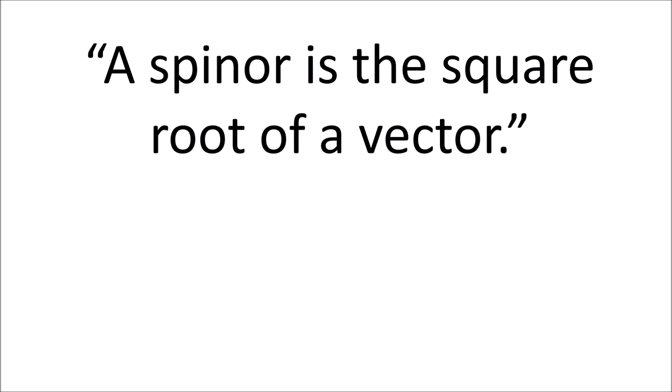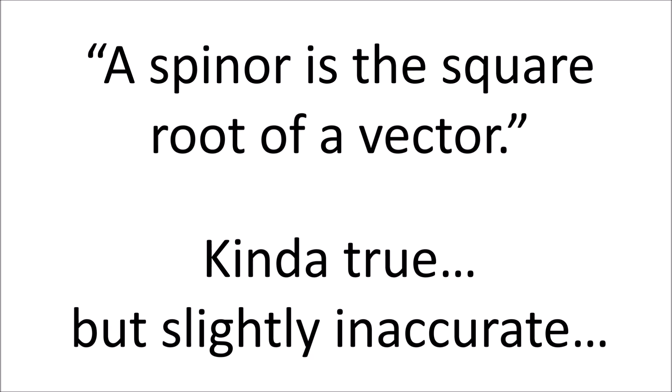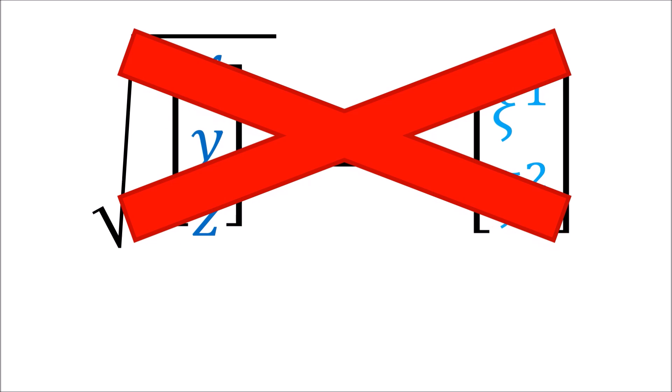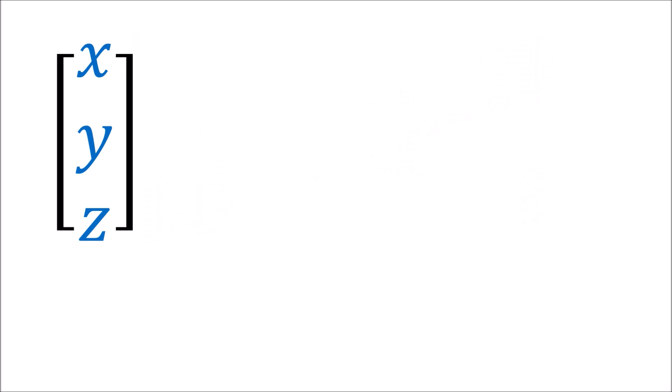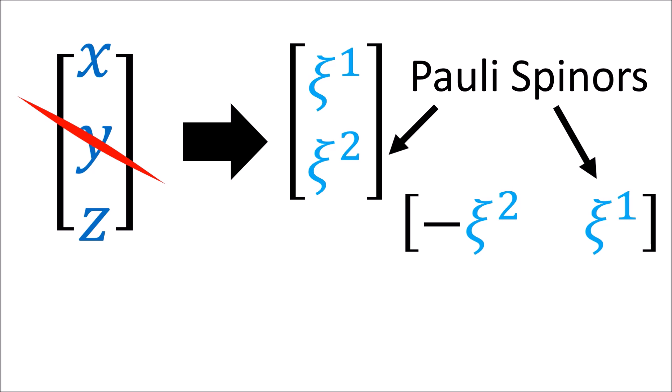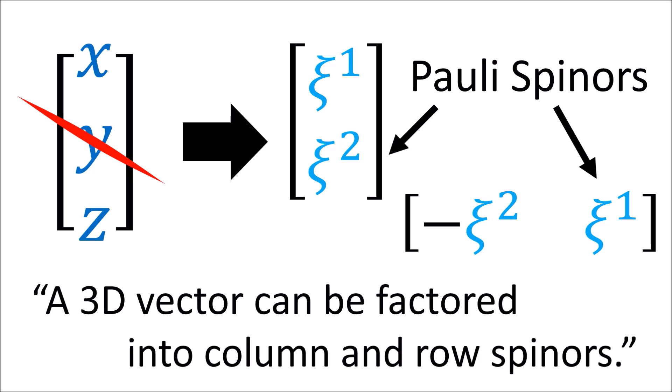It's often said that a spinner is like the square root of a vector, and that's kind of true but slightly inaccurate. If you're thinking of taking an actual square root of a vector and getting a spinner, that's not correct. What is true is that we can take a 3D vector and cut it up into two pieces called polyspinners. So it's better to say that a 3D vector can be factored into a column spinner and a row spinner.